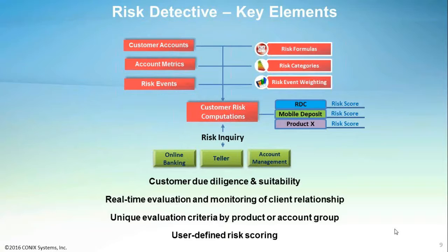So, for example, an NSF event might be assigned a higher negative rating than a stop payment event. The risk formulas for scoring customers are specified as mathematical expressions. Unique risk formulas can be created for each product or service offering. The risk formulas for a product are applied separately to each of the customer's accounts, and the product risk score is the average of all of your customers' account-level risk scores.